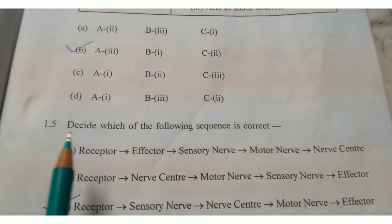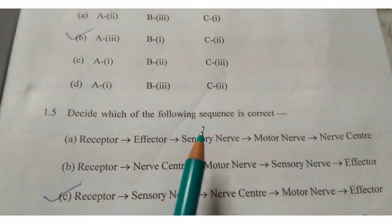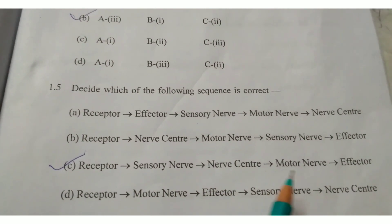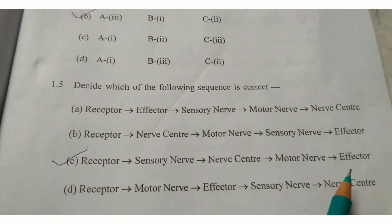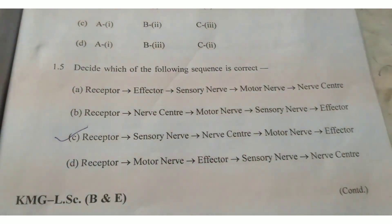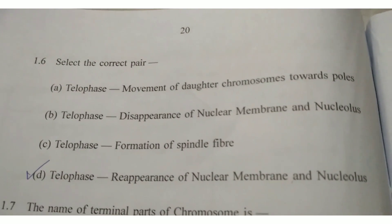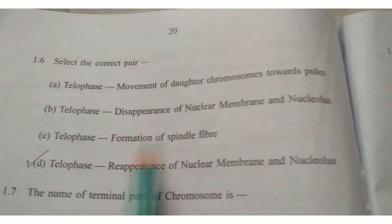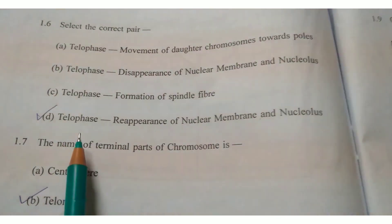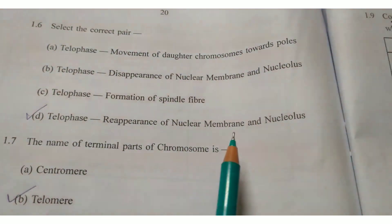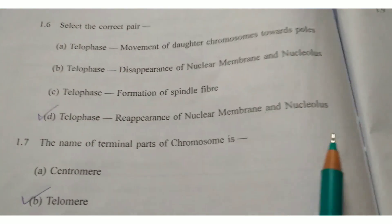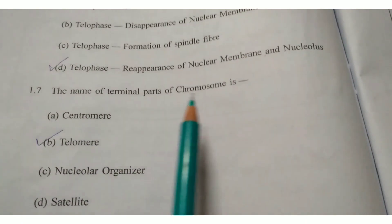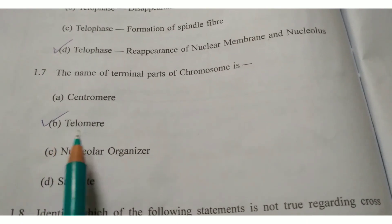Next, question 1.5: Decide which of the following sequences is correct. Write answer option C — Receptor, Sensory Nerve, Nerve Center, Motor Nerve, and Effector. Next, question 1.6: Select the correct pair. Write answer option D — Telophase: reappearance of nuclear membrane and nucleolus. Question 1.7: The name of terminal parts of chromosome. Write answer option B — Telomere.